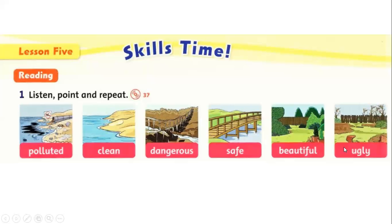Let us look at the words beautiful and ugly. Beautiful means it's a nice view — here we have green plants and trees and a clean area. However, in the second picture we can see broken wood and bare trees with no leaves on them. Somehow the area here is ugly.